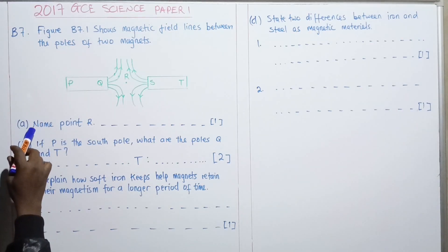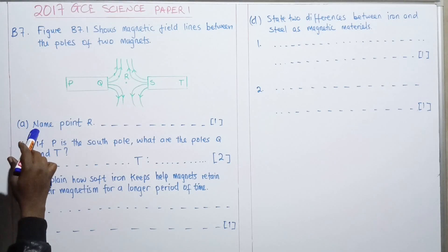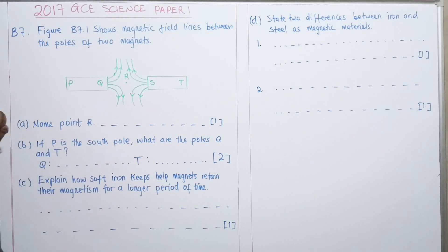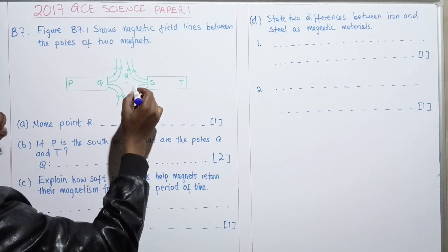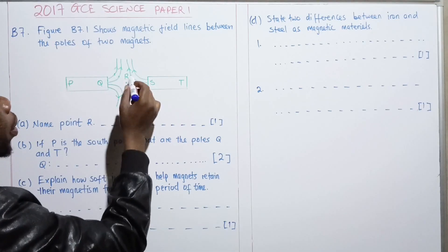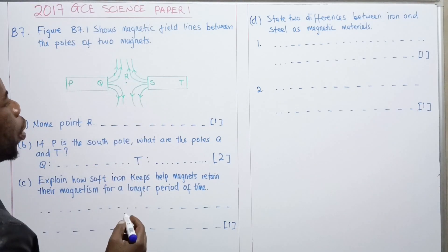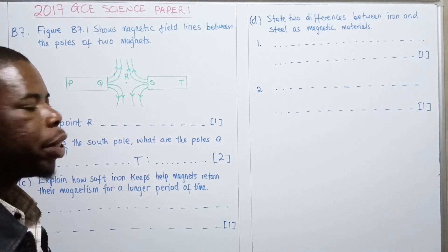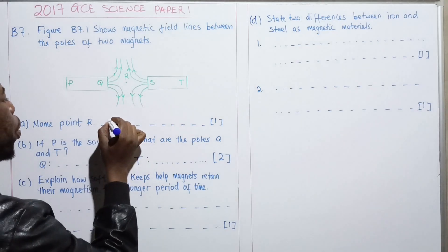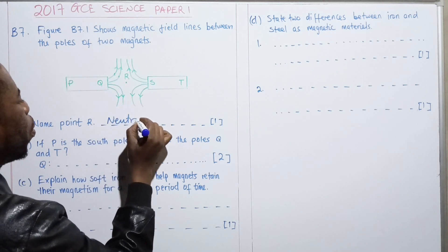Question A says: name point X. What do we call this point here which does not have magnetic fields? You can see there are no magnetic fields here. This point is known as a neutral point.